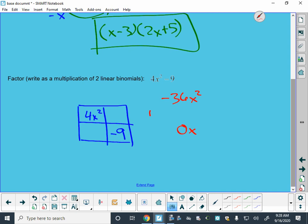And I know that I am then looking for something where when I multiply these things together, I get a negative 36x². But when I add them together, I get a 0x. And so that looks like a negative 6x and a positive 6x.